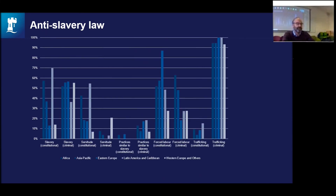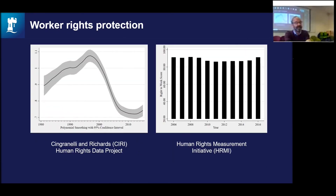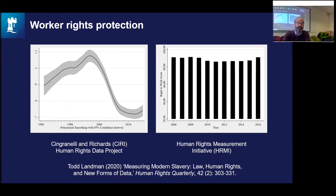Katarina Schwartz in the Rights Lab has coded all anti-slavery legislation around the world, producing comparative figures on slavery, servitude, practices similar to slavery, and other categories of exploitation, plotted by region. The Cingranelli-Richards dataset has a measure called worker rights protection — looking at State Department and Amnesty International reports, coding on a standard scale the degree to which those rights are protected, with two teams coding. The Human Rights Measurement Initiative does the same thing slightly differently, producing a right-to-work score as an example.